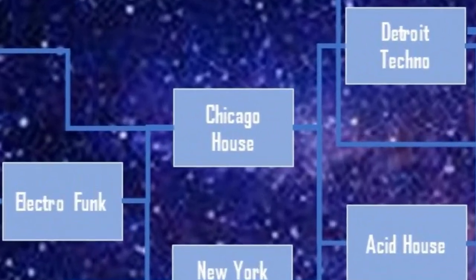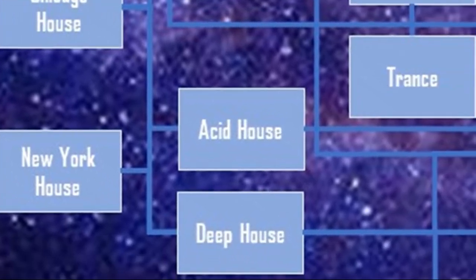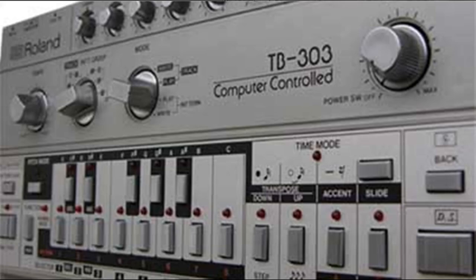The acid house genre gradually evolved from Chicago house simply by replacing the regular bass line synthesizer with a more squelchy and tweaked bass line. A clear step here was of course the release of 'Acid Tracks' by Phuture in 1987. The main components of acid house were drum machines, bass line synthesizers, some samples, and vocals.